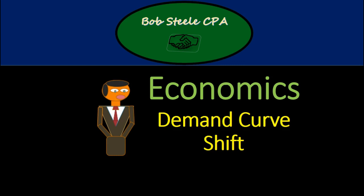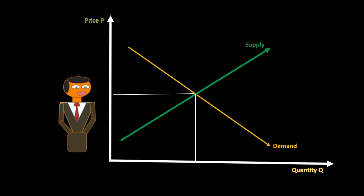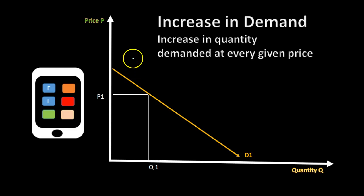In this lecture we're going to continue our discussion of demand and talk about things that shift the demand curve. We have our graph with the downward sloping demand curve and the upward sloping supply curve, meeting at the point of equilibrium. We're going to take this apart and concentrate on these components individually, and we are still working on the downward sloping demand curve at this time.